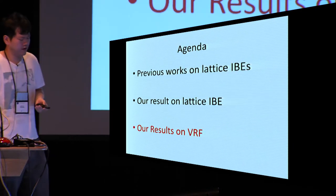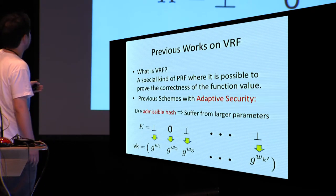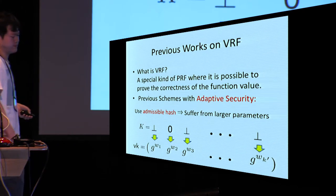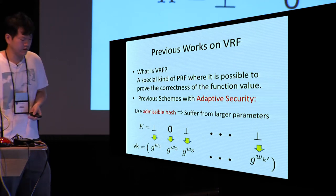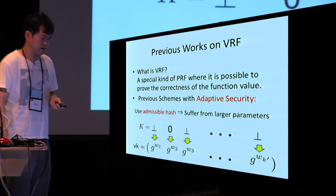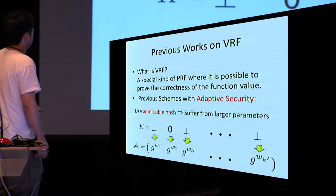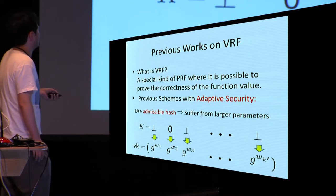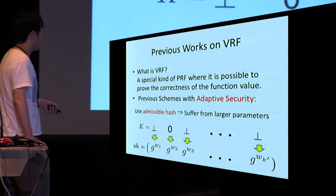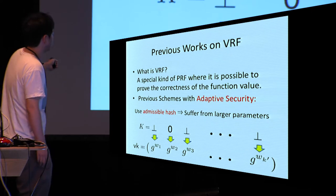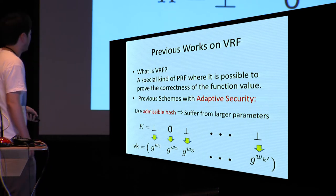Next, I briefly explain our results on VRFs. A VRF is a special kind of function where it is possible to prove the correctness of the function value. In previous schemes with adaptive security, they used the admissible hash function, which caused very long public parameters because the secret randomness K is embedded into the verification key or public parameters in a component-wise manner.